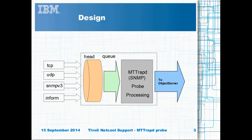Here we can see how the probe processes traps and informs. The probe can listen on up to four threads. This is described as the probe head, with the event queue reading the processed SNMP events, passing them on to the rules file processing thread, which outputs the processed events to the object servers.